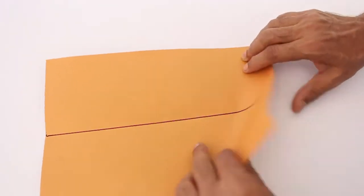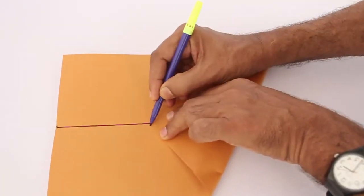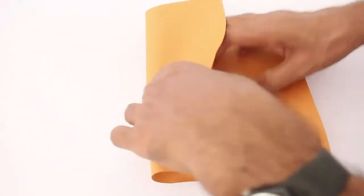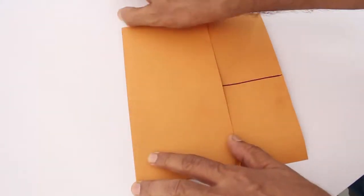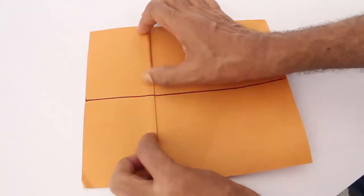Now take the left corner and place it on the midline and mark that point. Now fold the paper downwards along that mark. Crease well.